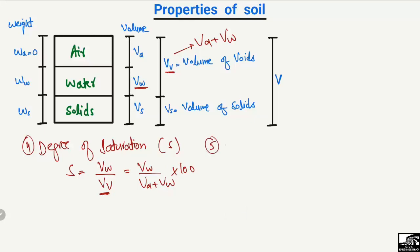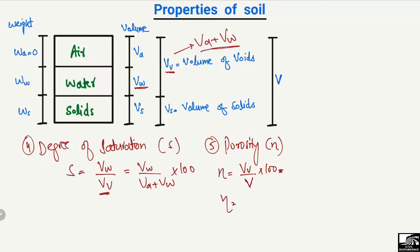The fifth property is the porosity. Porosity is equal to the volume of the voids divided by the total volume of the soil sample. We know that the volume of the voids is the combination of volume of air and water, divided by the total volume of the soil sample, multiplied by 100 percent. This gives us the porosity of the soil sample.